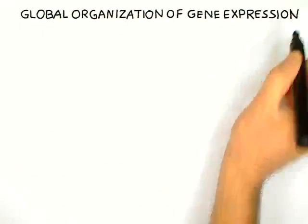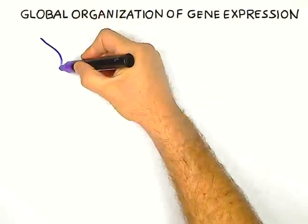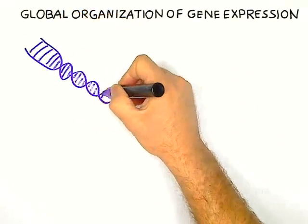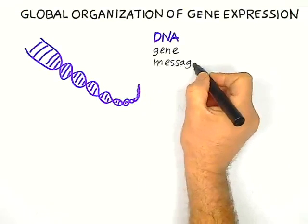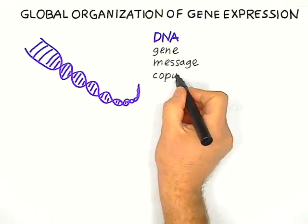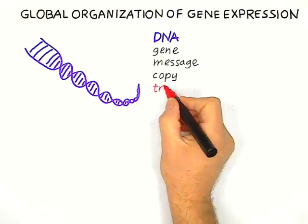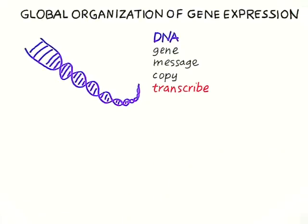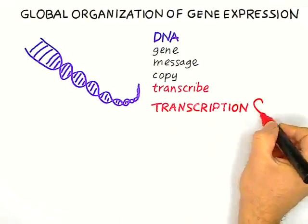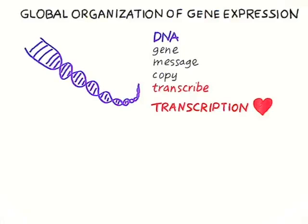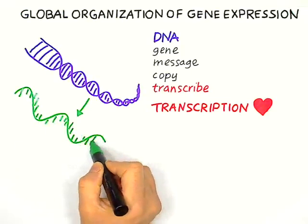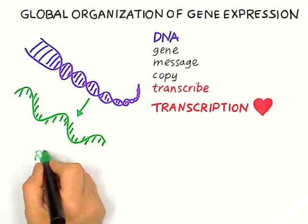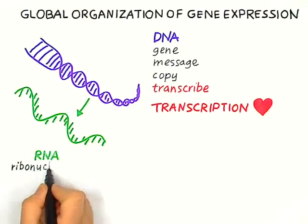The global organization of gene expression starts with DNA, which encodes genes. Expression means there is a message, and who says message usually implies that information is copied — or transcribed, as biologists say. Transcription is the first fundamental step in gene expression. In a healthy person, transcription consists in copying information contained in DNA and recreating it in another similar molecule, RNA, which stands for ribonucleic acid.